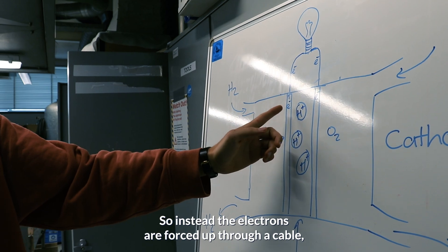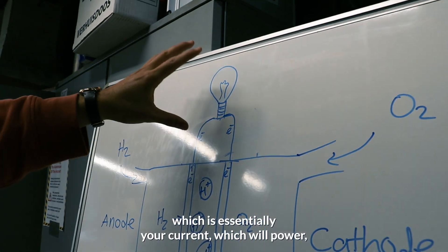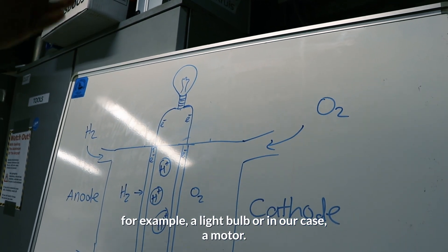So instead, the electrons are forced up through a cable, which is essentially your current, which will power, for example, a light bulb or in our case, a motor.